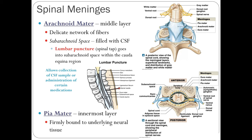The innermost layer is the pia mater — the innermost delicate layer, firmly bound to the spinal cord itself. It is held in place by astrocytes, a type of neuroglia found in the CNS.